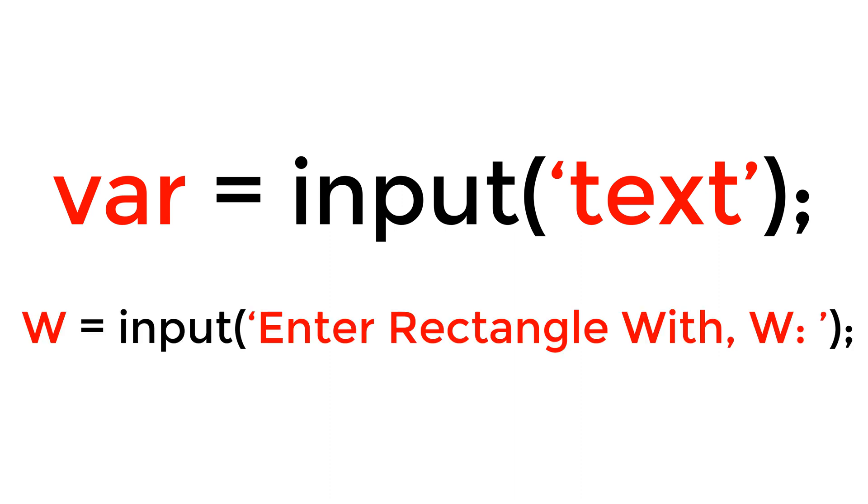In this example, you can display 'enter the rectangle width W' and save it in the variable W. You can similarly do this for other parameters, H and R.